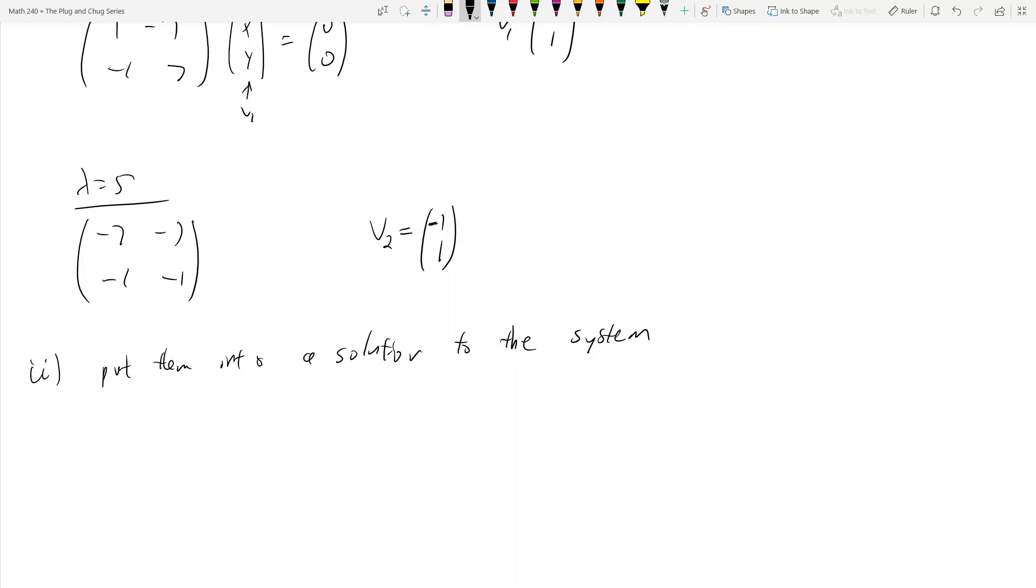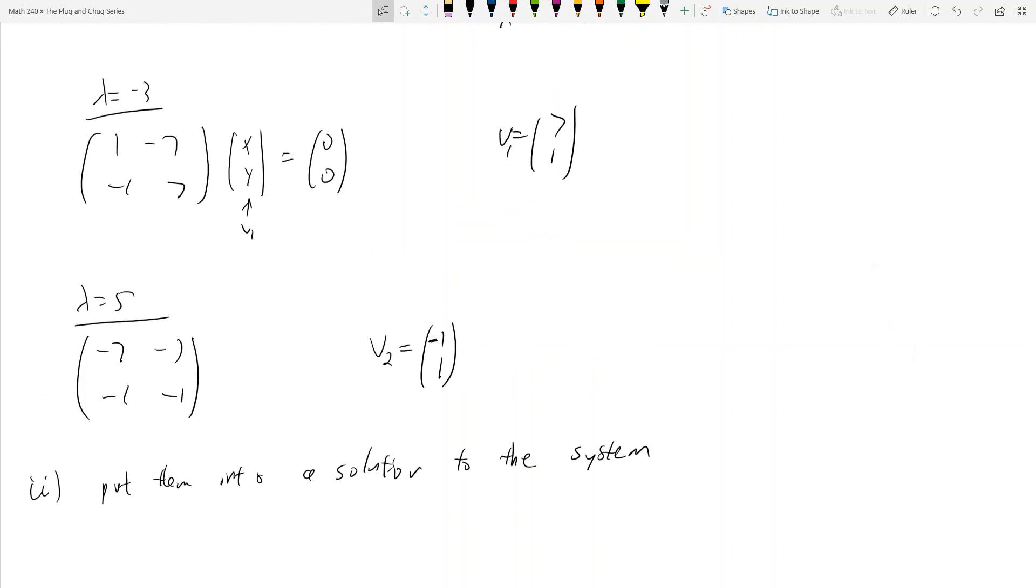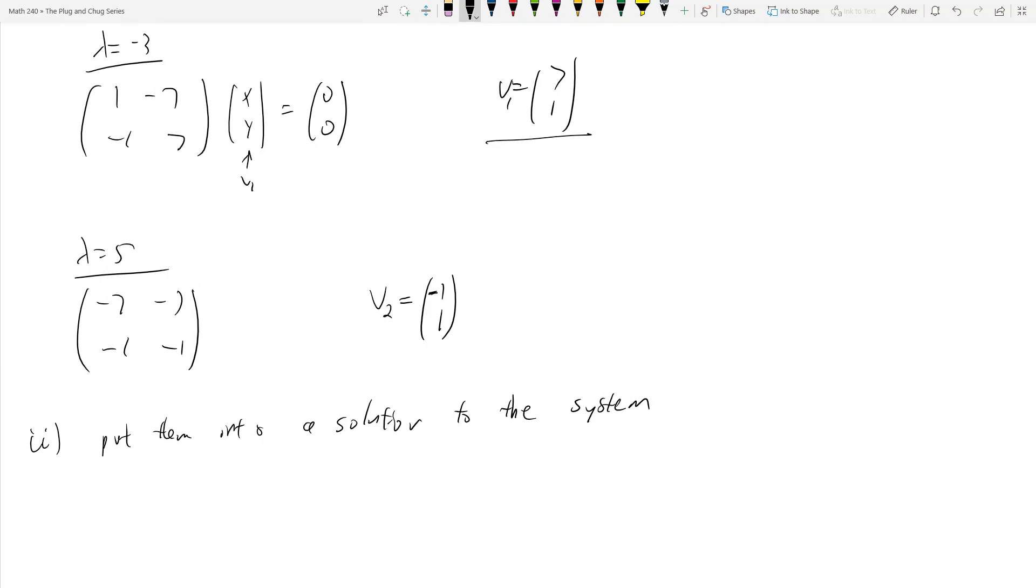Well, this first eigenvector corresponds to λ = -3. So what I do is say there's some constant c₁ times e^(-3t), because λ equals -3. And then I take v₁.